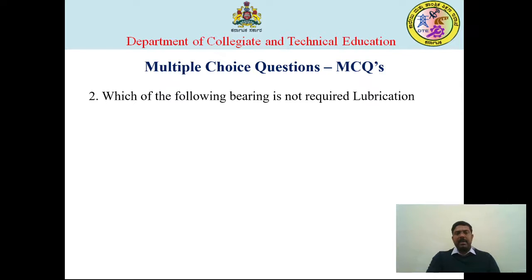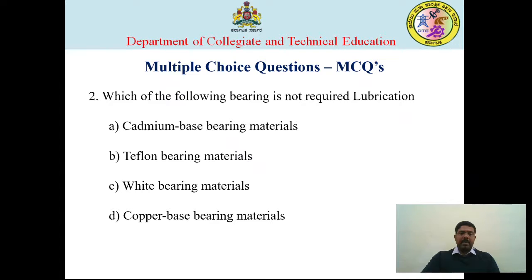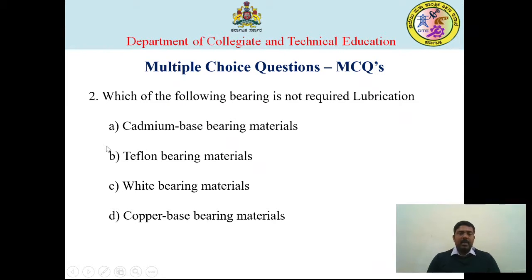Question two: which of the following bearings does not require external lubrication? Options are: cadmium-based bearing materials, Teflon bearing materials, white bearing materials, or copper-based bearing materials. Teflon bearing materials are non-metallic and without lubrication can achieve a coefficient of friction as low as 0.004. So the correct answer is Teflon bearing materials.